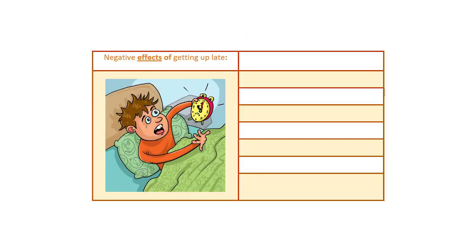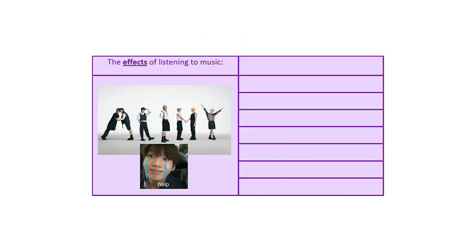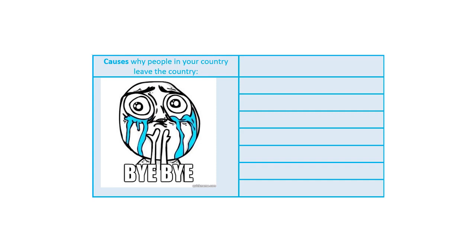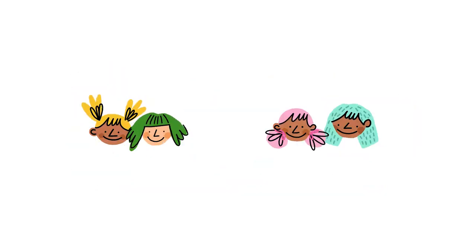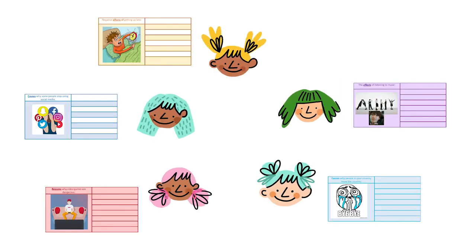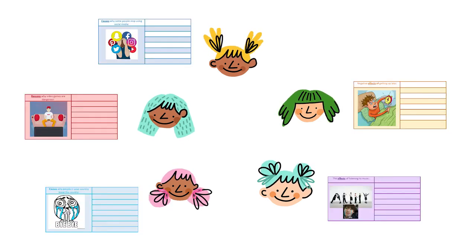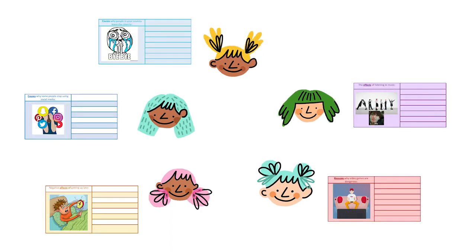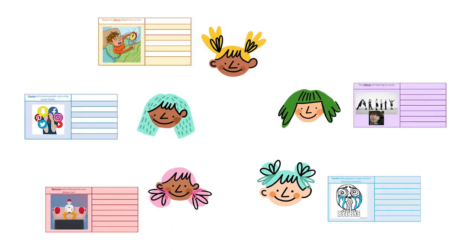I gave each student a paper with a particular topic like these ones. If you have a large class, students can work in pairs or in groups. Then I explained that they have to write down one single cause or effect depending on their cards and pass it to the student next to them. On the new card, they do the same. The cards kept moving from one student to another until we got enough ideas.